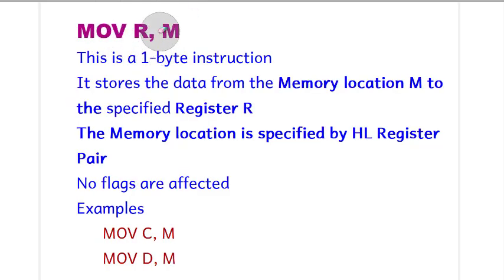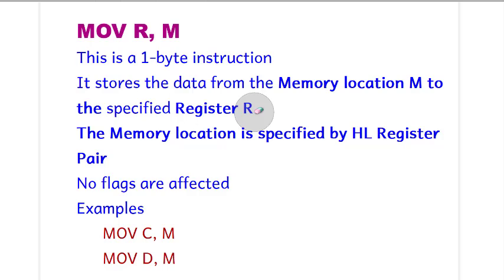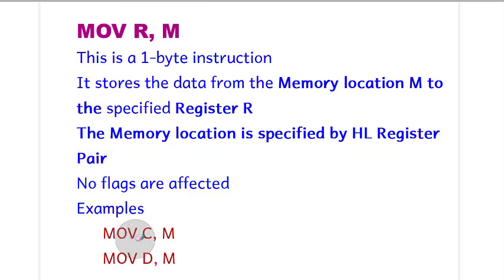The next instruction is MOV R,M. This is also a one byte instruction and it stores the data from the memory location M to the specified register R. Here also the memory location is specified by the HL register pair. No flags are affected. Some common examples are MOV C,M and MOV D,M. In this case the data from memory location M, which is pointed by HL, is stored in C.